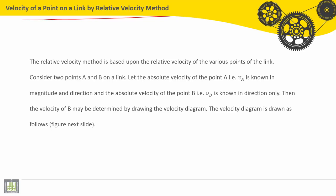on a link by relative velocity method. The relative velocity method is based upon the relative velocity of the various points of the link. Consider two points A and B on a link. Let the absolute velocity of the point A